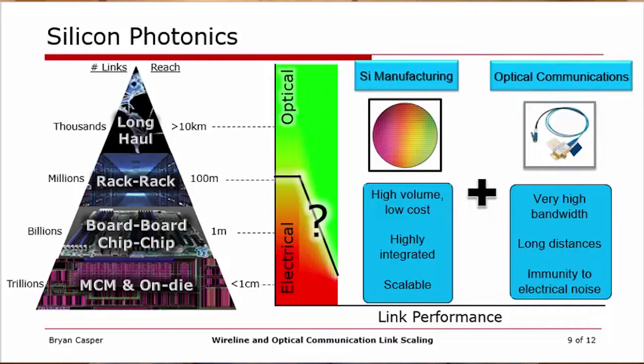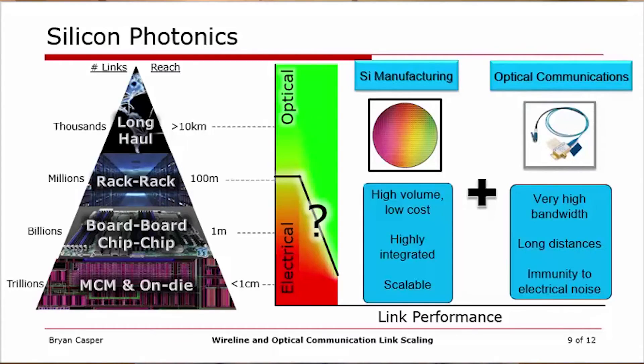Silicon photonics combines the great promise of optical communications — the almost unlimited bandwidth of optical fiber and its components — with modern silicon manufacturing technology. What is commonly used in CMOS fabs is used to pattern optical devices, whether modulators, waveguides, photo detectors, and so forth, on silicon in a low-cost manner and at very small dimensions, so that they can be deployed in very large volumes and pull the cost down dramatically.